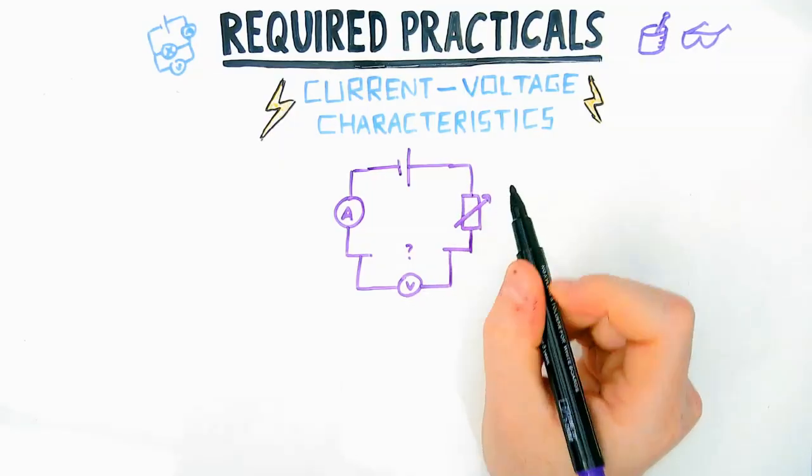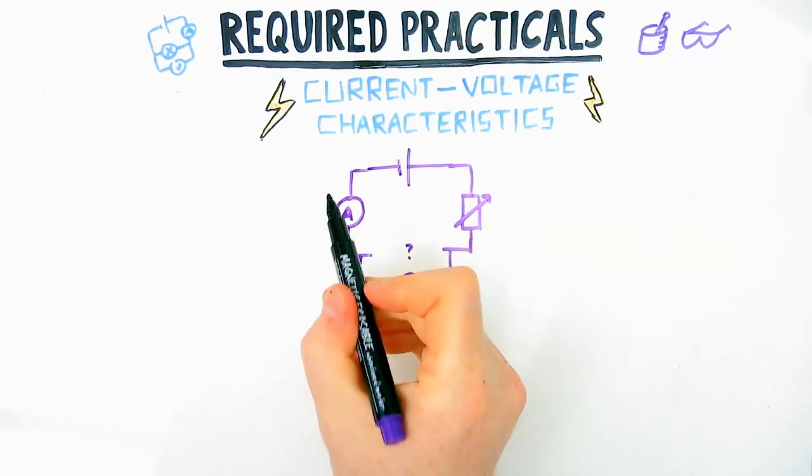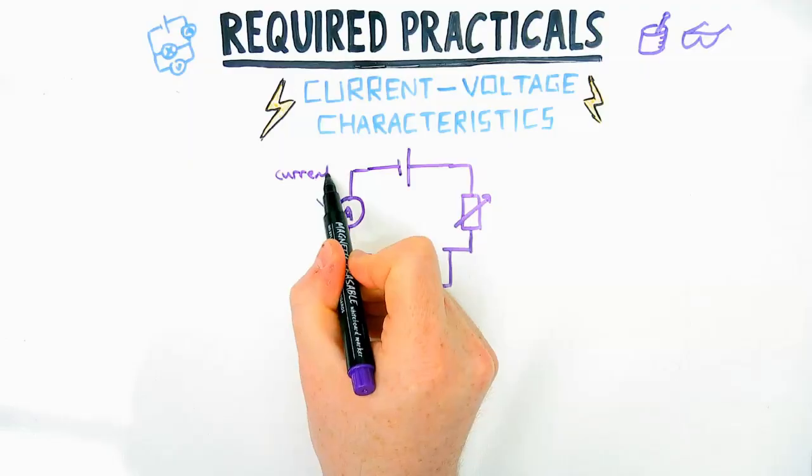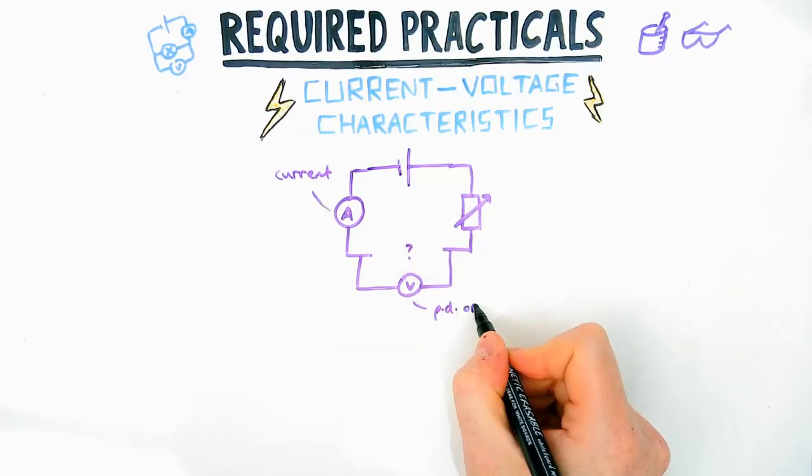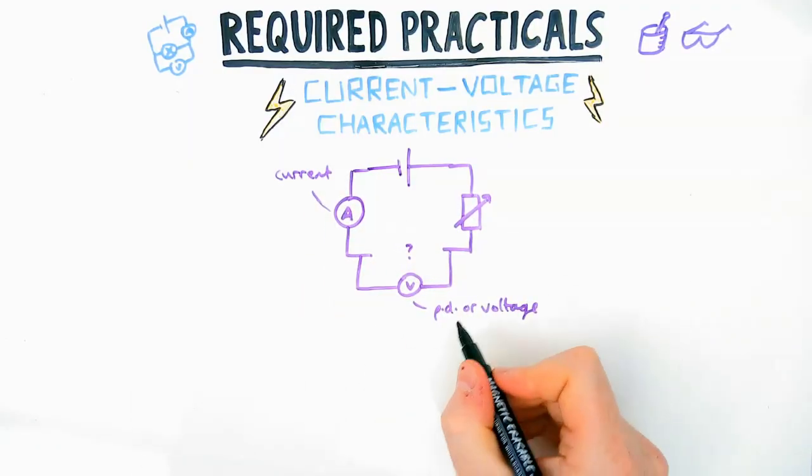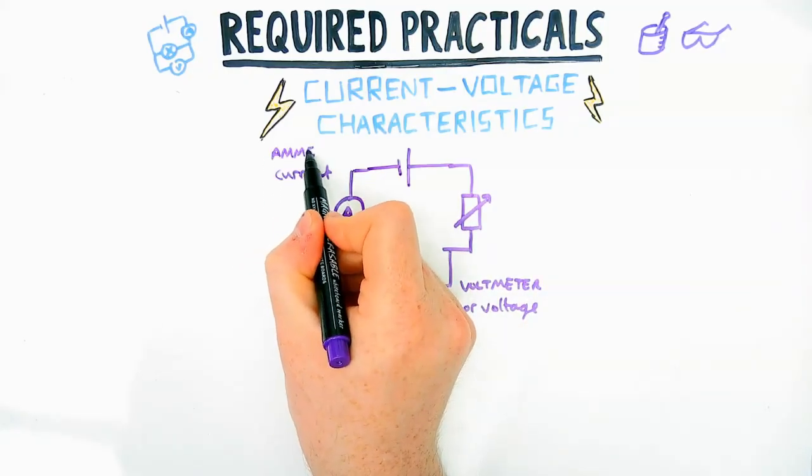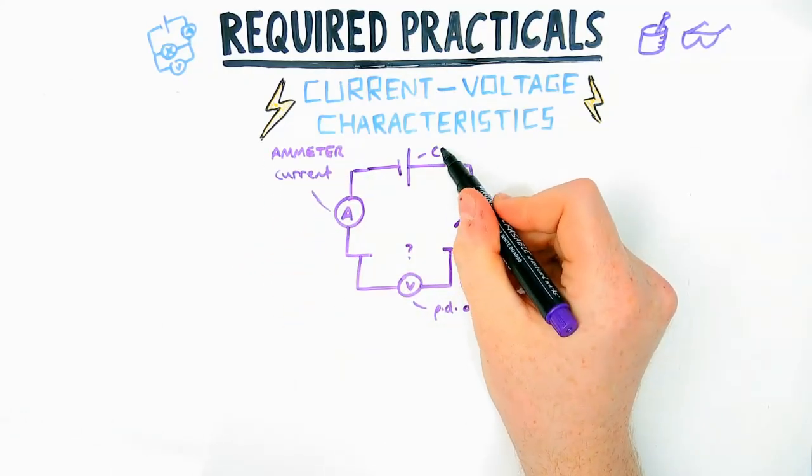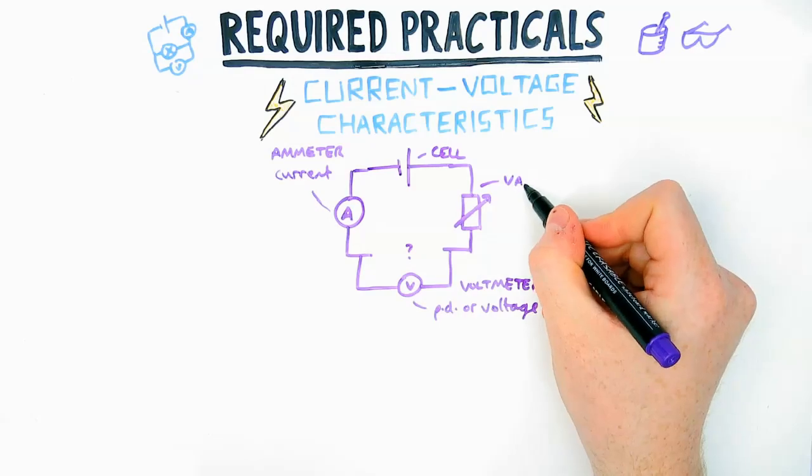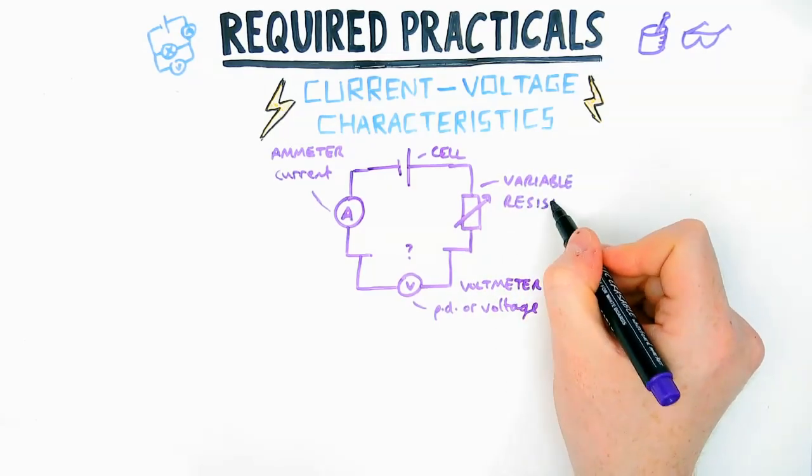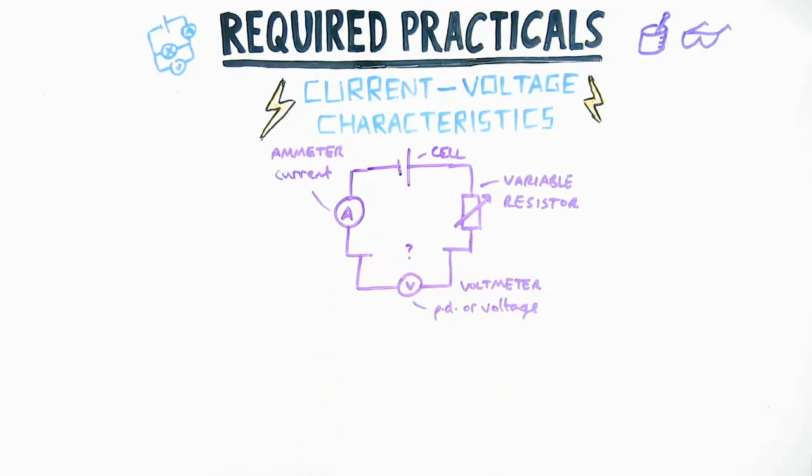Now you need to know the circuit diagram. You need an ammeter, a voltmeter, and a variable resistor. An ammeter measures current, a voltmeter measures the potential difference or voltage, and the variable resistor is the thing I guarantee you'll forget, which changes the resistance and therefore changes the current in the circuit.